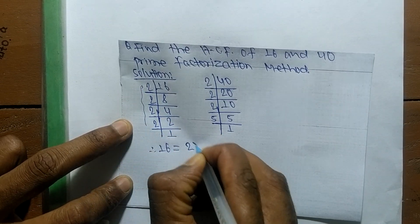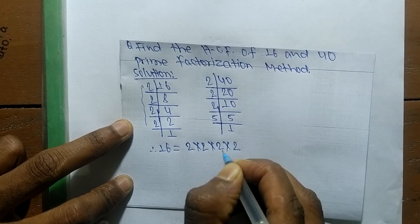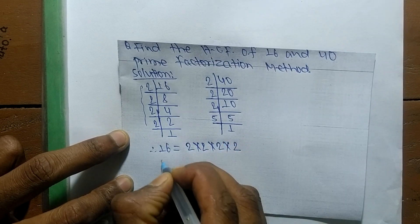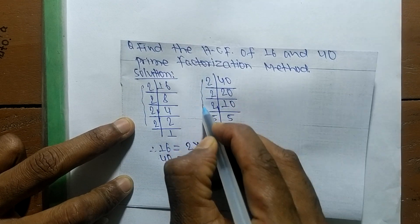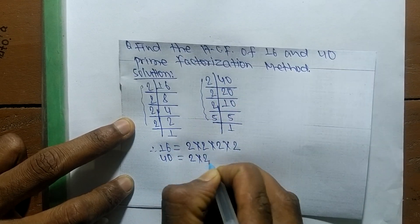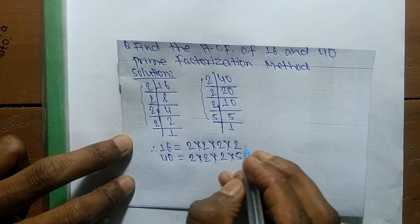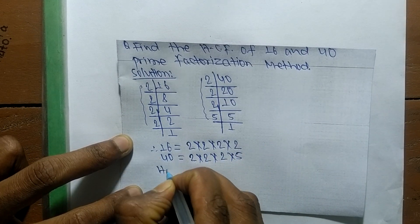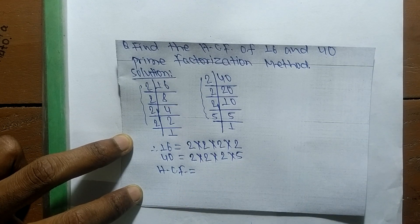16 is equal to 2 × 2 × 2 × 2. Likewise, the prime factors of 40 are equal to 2 × 2 × 2 × 5.